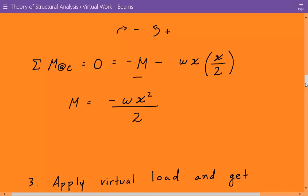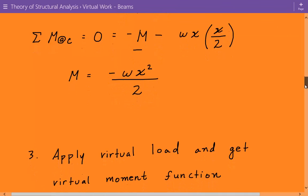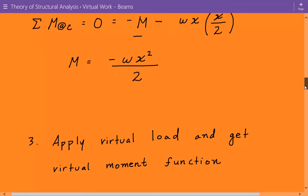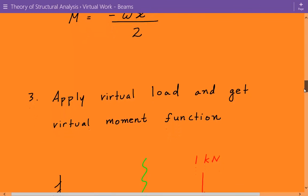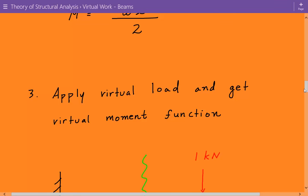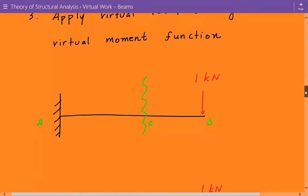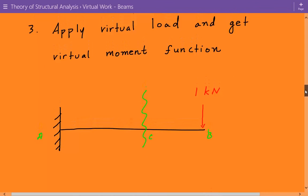The next step is we're going to apply a virtual load and get a virtual moment function. We're going to place a unit load on the beam at the point and in the direction of the desired displacement. So we need the displacement at B, so that's where we're going to apply a virtual unit load equal to 1 kilonewton. And with the virtual load in place and all the real loads removed from the beam, now we're going to calculate the internal moment as a function of the coordinate system that we've chosen.